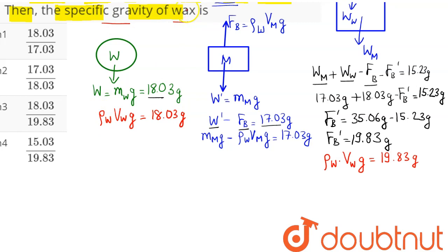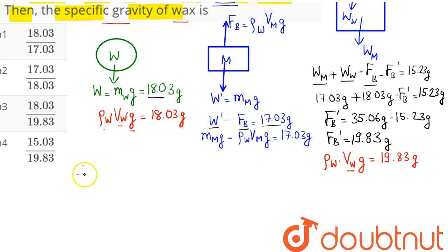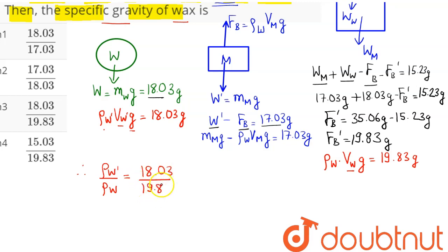The specific gravity of wax is defined as density of wax divided by density of water. Since volume of wax and g are the same in both equations, dividing gives us: specific gravity of wax = 18.03 divided by 19.83. This corresponds to option number 3, which is the correct answer.